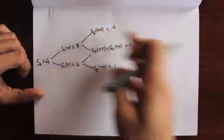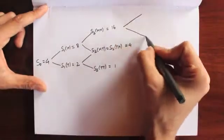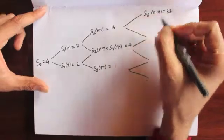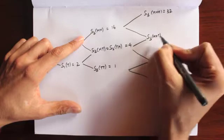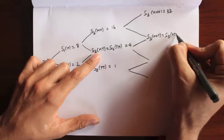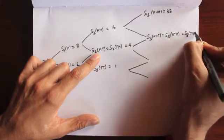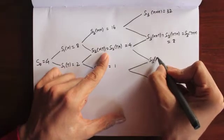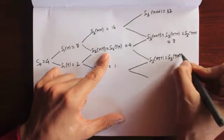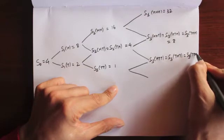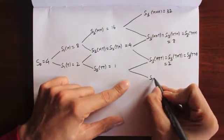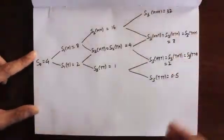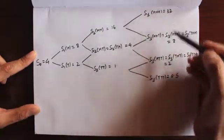We can extend the experiment for a third coin toss. Head-head-head gives 32; head-head-tail gives 8; head-tail-head gives 8; tail-head-head also gives 8; and tail-tail-tail gives 0.5. So all the possible outcomes and the corresponding stock values are now listed.